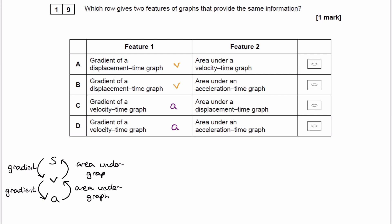The area under a velocity-time graph gives us displacement, and the area under an acceleration-time graph gives us velocity.